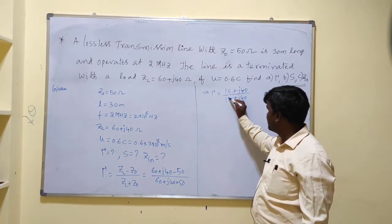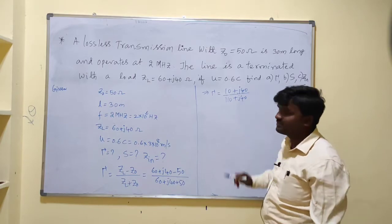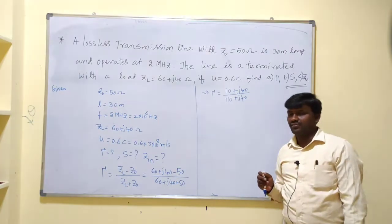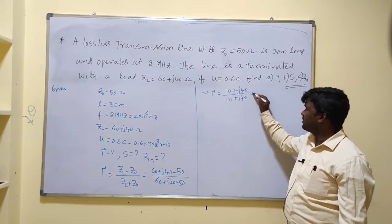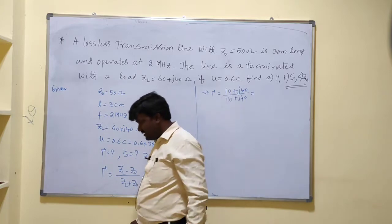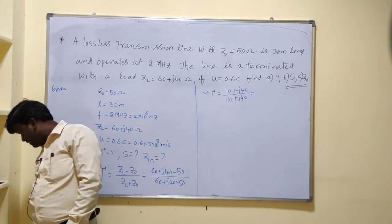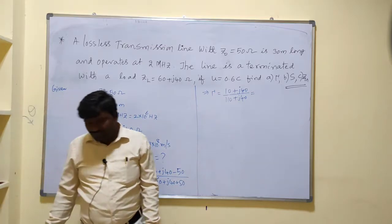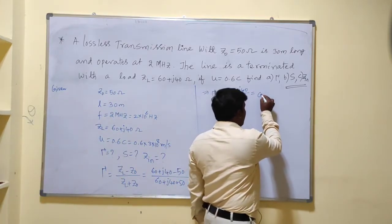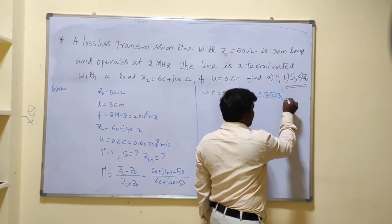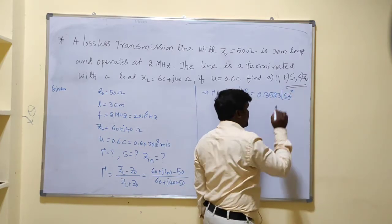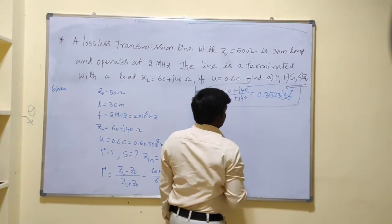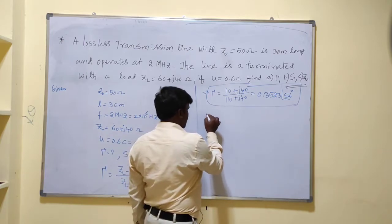So we have (10 + j40) divided by (110 + j40). After simplification, the value of gamma equals 0.3523 at an angle of 56 degrees.